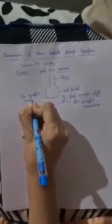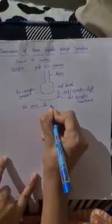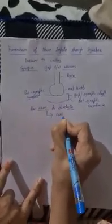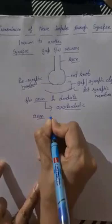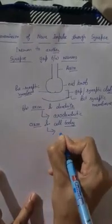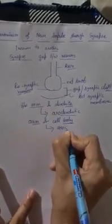This one membrane is known as the pre-synaptic membrane. This synapse may be of two types: it may be between the axon of one neuron and the dendrite of another neuron, which is known as the axo-dendritic synapse, or it may be between the axon of one neuron and the cell body of another neuron, which is known as the axo-somatic synapse.